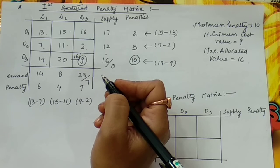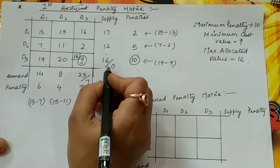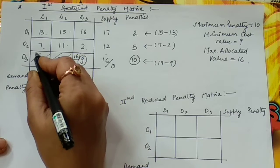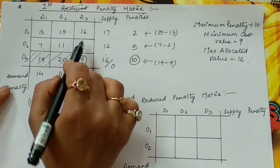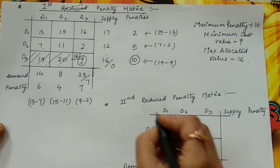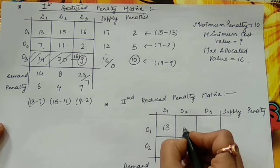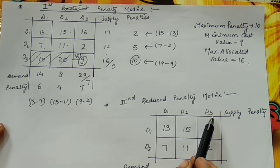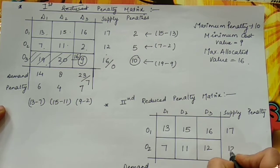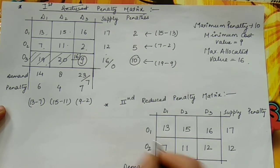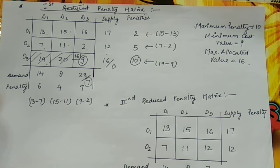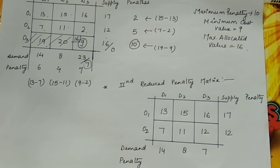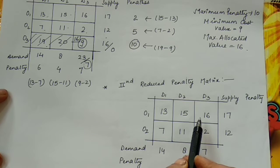After crossing out the satisfied row, we write the new reduced penalty matrix. We copy the remaining rows and columns: cost values 7, 11, 12 carry over. Origins remain O1 and O2 with supplies 17 and 12. The destinations remain D1, D2, with updated demand of 7 for D3.